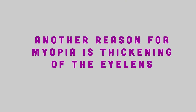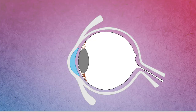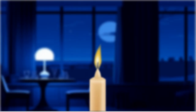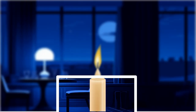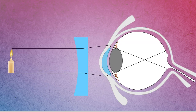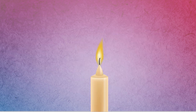There is one more reason for myopia. In this condition, the focal length of the eye lens decreases, causing the lens to become thicker. As a result, rays from an object bend more after passing through the lens. Hence, they converge before reaching the retina, forming the image in front of it. The solution for this is also to use concave lenses, which diverge the rays so that they meet at the retina, forming the image on the retina. This helps us see the object clearly.